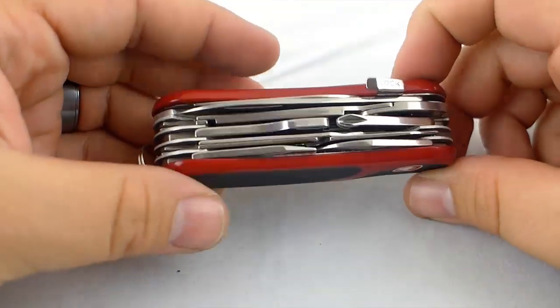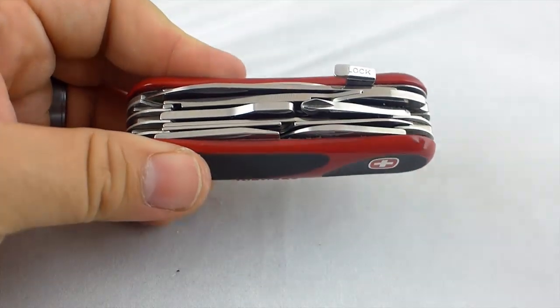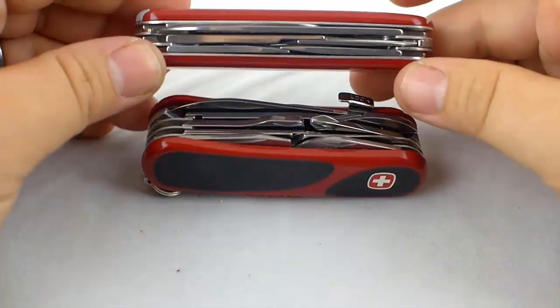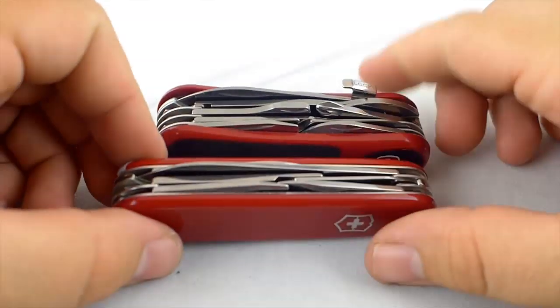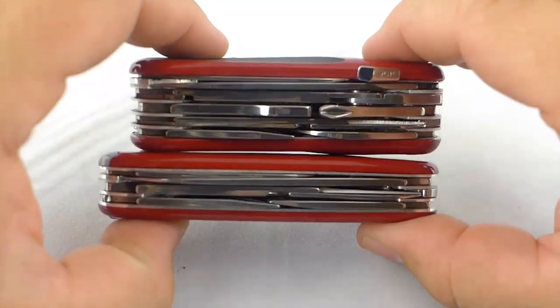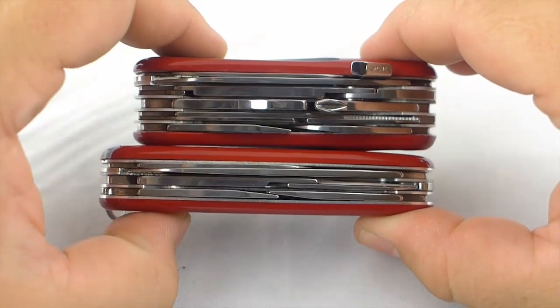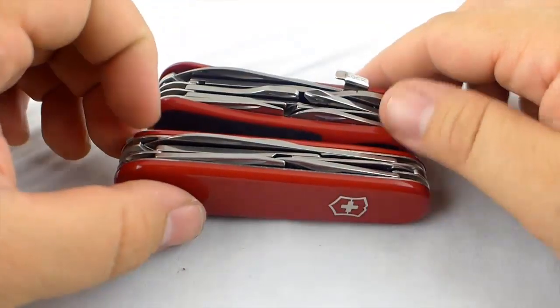Now I originally got this knife because I've been using a super tinker. Which I love. This is a knife that I carry around just about every day. Slightly longer than the EvoGrip S557. Obviously not nearly as wide.